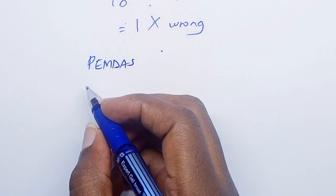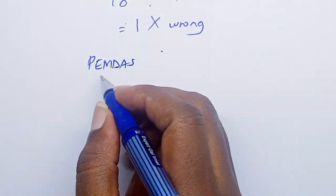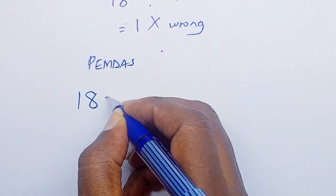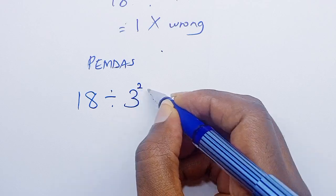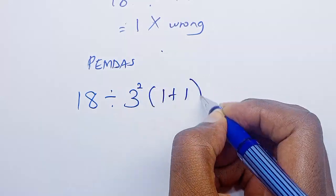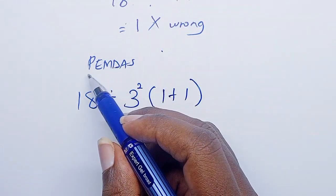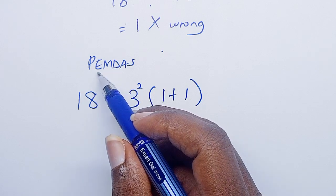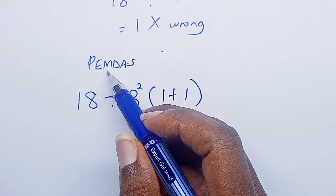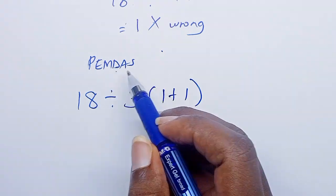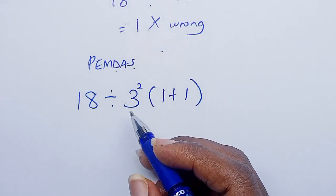You're supposed to follow the operations from left to right. So we have 18 divided by 3 squared into 1 plus 1. P is for parentheses, E is exponents, M multiplication, D division, A addition, and S subtraction.